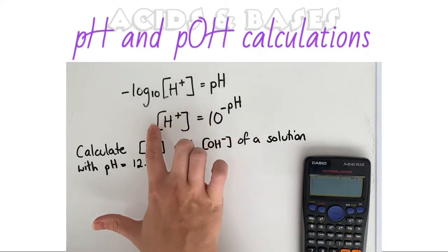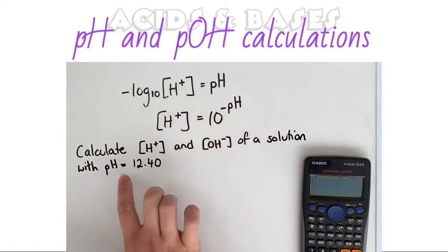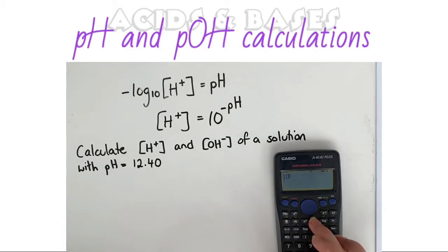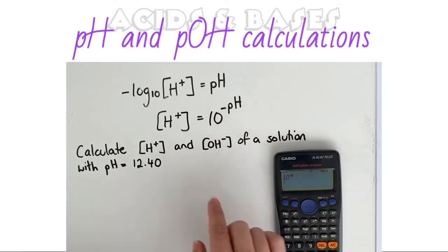So we can use this formula here. We're given the pH, so what we're going to put into our calculator is 10 to the power of negative, what the pH value is, 12.4.